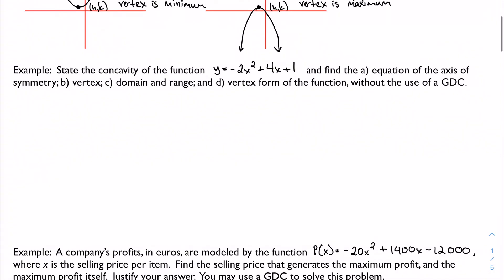So let's look at an example. And I want to look at the concavity of this function, find the axis of symmetry of the vertex domain and range, as well as the vertex form of the function. So, easy one to start. Let's just start with the concavity. Again, I said easy one to start, because all I'm going to do is look at my leading coefficient. Negative 2 is obviously a negative number. And because my leading coefficient is negative, this function is concave down. I'm going to have some kind of an orientation that looks like this.